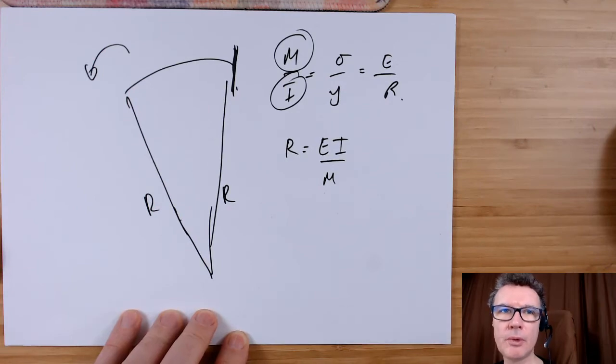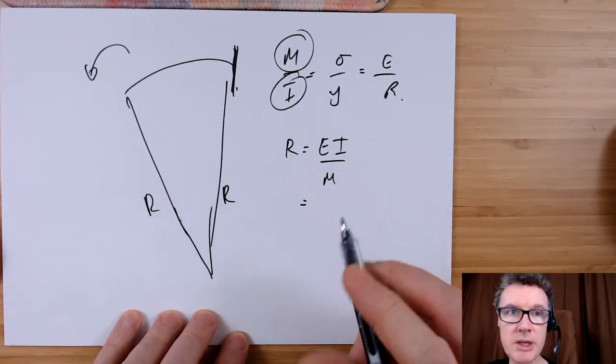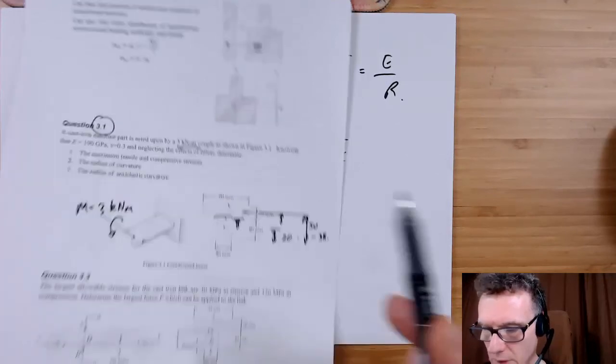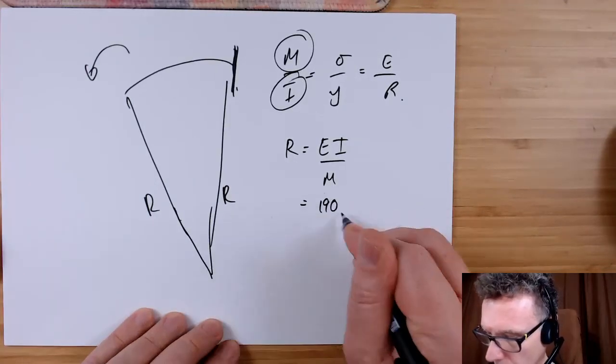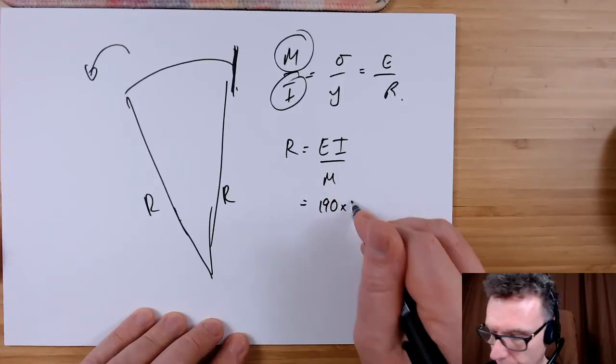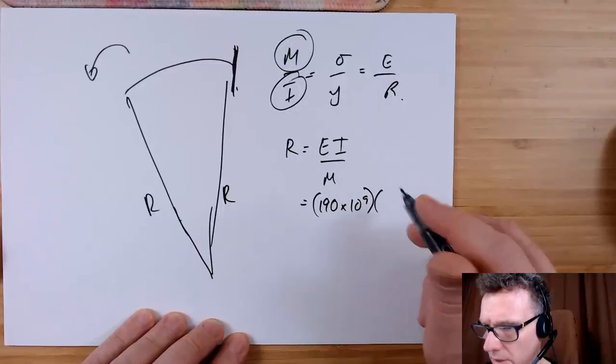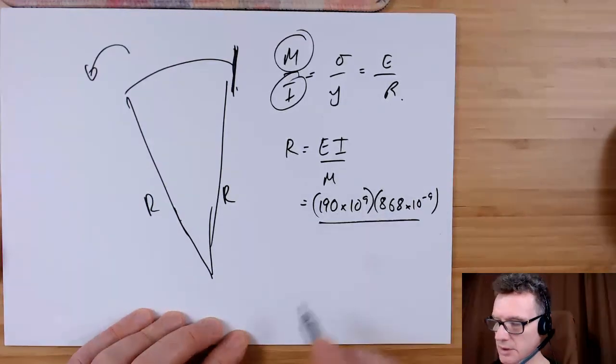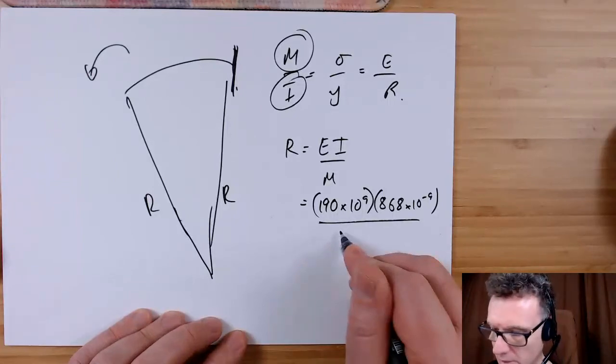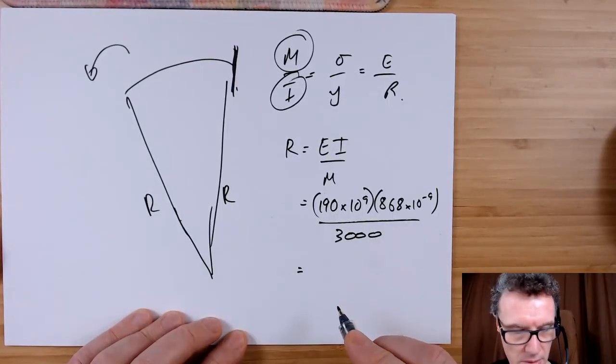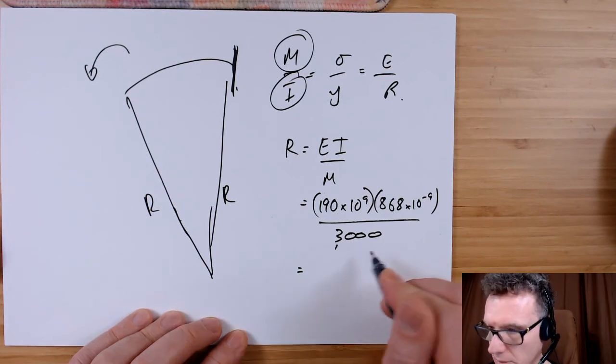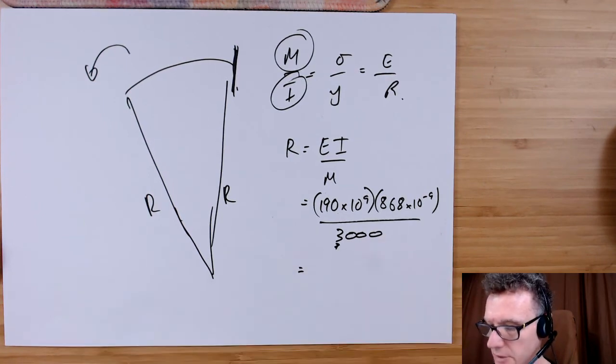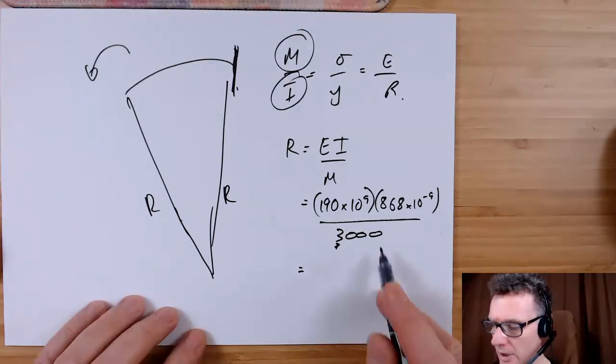So sticking in your numbers, what we got for E: 190. The I was 868 times 10 to the minus 9. Make sure it's in SI units, so my final answer will be in meters, and my M was 3,000. Yeah, oh dear, watch out. I've got that wrong. No, no, no, I've got that right. 3,000, yeah, before I hadn't applied my K. I have, so that's fine.